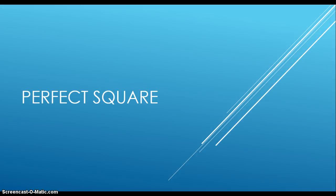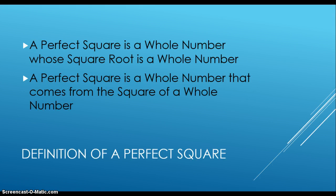Tonight you guys are going to learn about perfect squares and perfect cubes, and we're going to start with perfect squares. A perfect square is a whole number whose square root is a whole number, or a perfect square is a whole number that comes from the square of a whole number. Those are the two definitions of a perfect square.